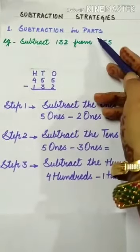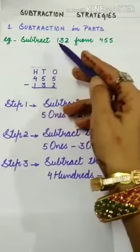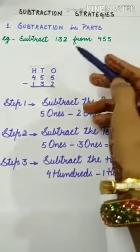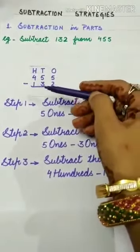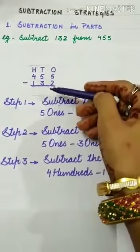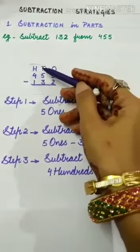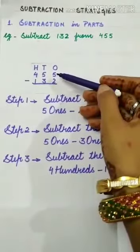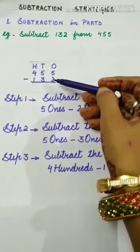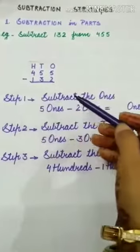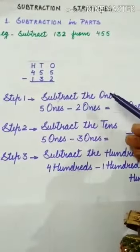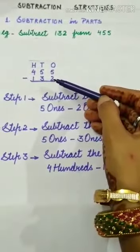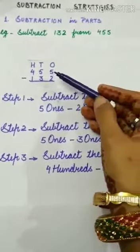Let us start with the first strategy, subtraction in parts. Let us subtract 132 from 455. For this, first arrange these two numbers vertically under ones, tens, and hundreds column. Write down the bigger number first, then the smaller number. Step one is subtract the ones.